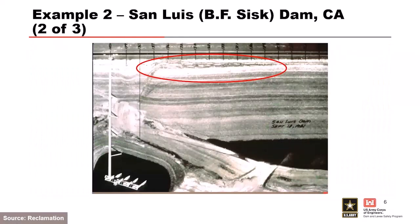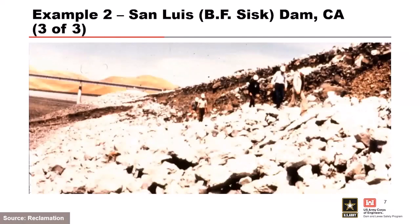An overhead view shows the failure was quite extensive, with a large scarp visible on the slope—you can see people walking along it to get a sense of scale. They repaired the slide and BF Fisk Dam is still in operation today.